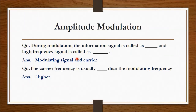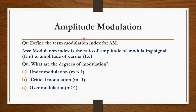The next question on amplitude modulation is: during modulation, the information signal is called what, and the high frequency signal is called what? The answer: the information signal is called the modulating signal, and the high frequency signal is called the carrier signal. The carrier frequency is higher than the modulating frequency.